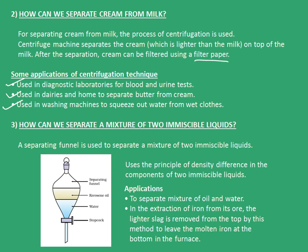When the stopcock is opened, water gets separated out, and as soon as the water gets separated out, the stopcock is again closed, leaving behind kerosene oil in the funnel. Some applications of using a separating funnel are: to separate a mixture of oil and water, and in the extraction of iron from its ore. The lighter slag is removed from the top by this method, leaving the molten iron at the bottom in the furnace.